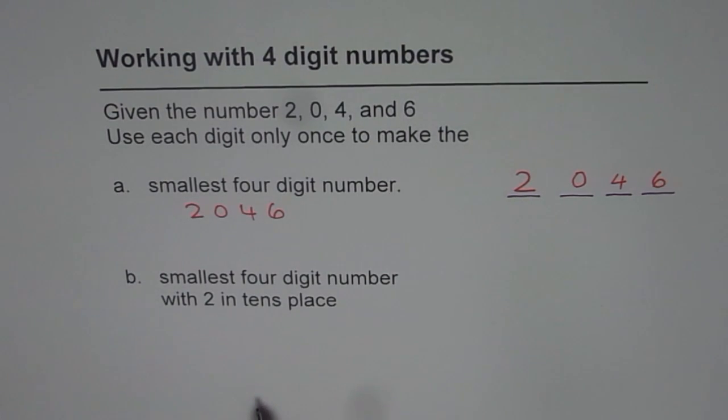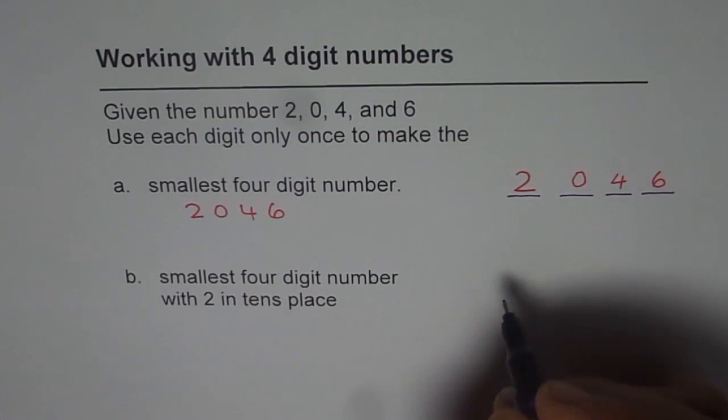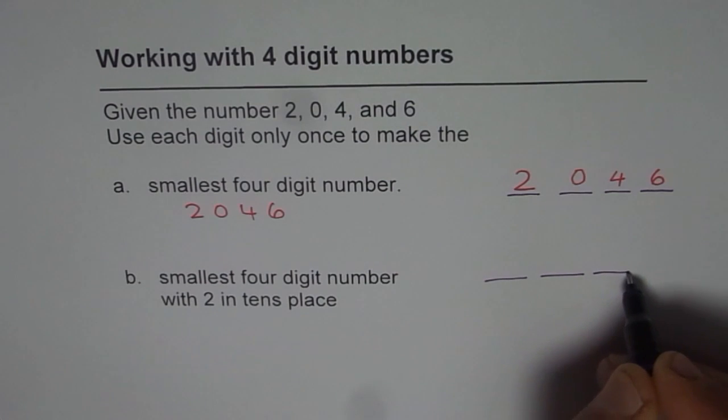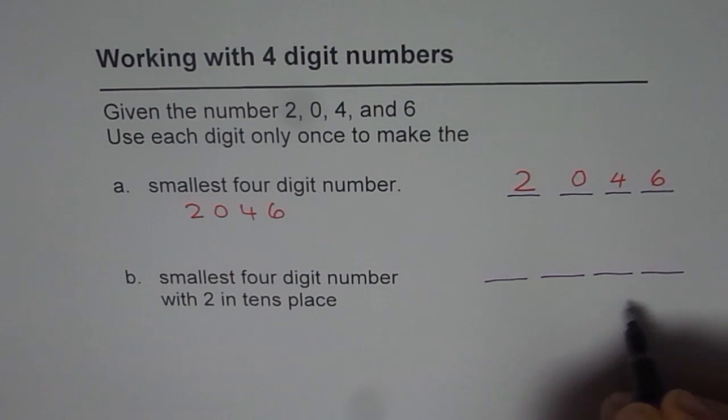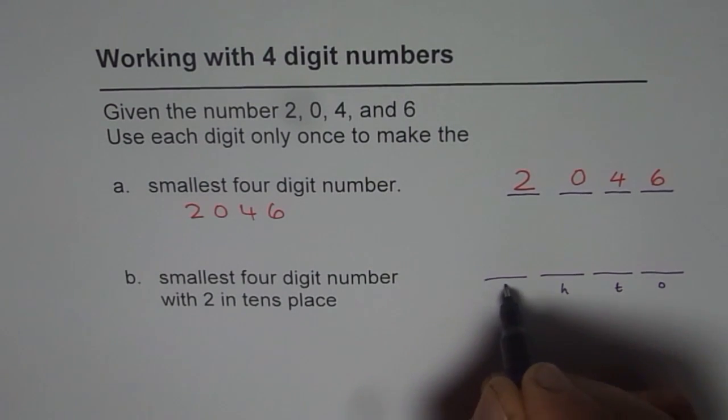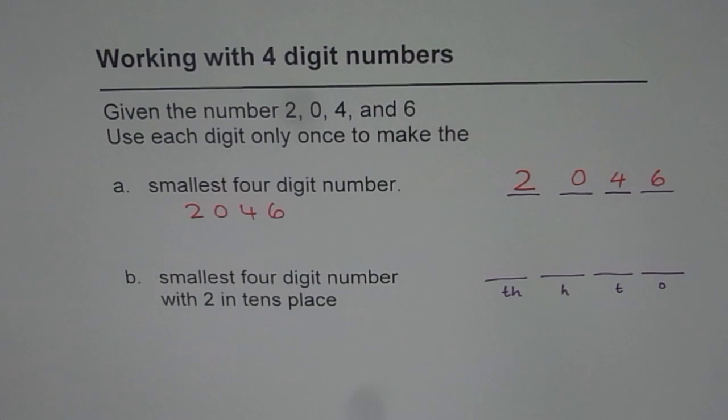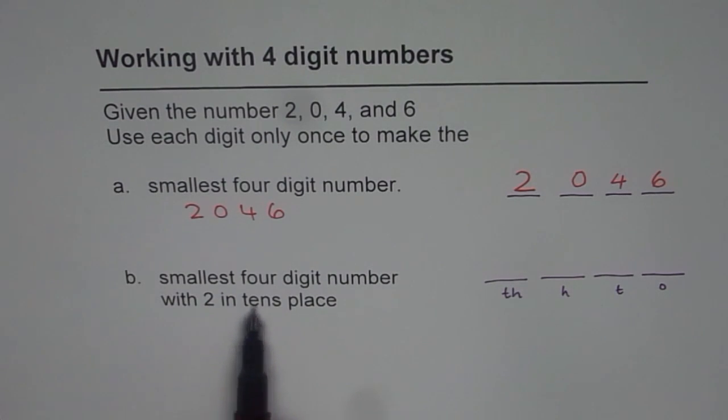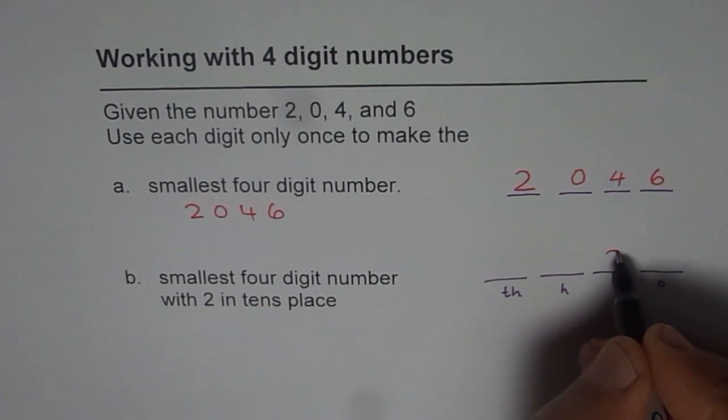Now let us do the second part, which is smallest four digit number with 2 in tens place. So let us again make our four places. These are the four places: ones, tens, hundreds and thousands. So we need smallest four digit number with 2 in tens place. So I have to put two here.